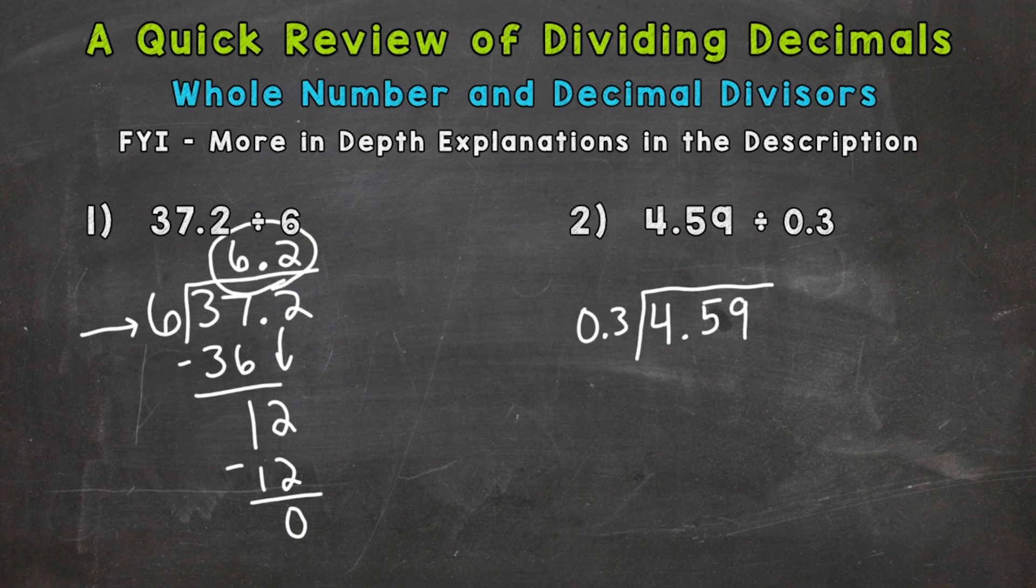We need to make it a whole number by multiplying by a power of 10, which we can do by moving the decimal. Let's move the decimal once to the right to make that a whole 3. Just like everything else in math, we have to keep everything balanced. Whatever you do to the outside, you have to do to the inside. So we move the decimal once to the right on our dividend too.